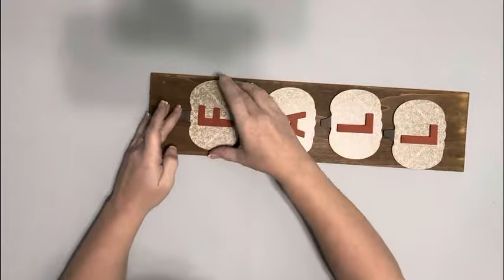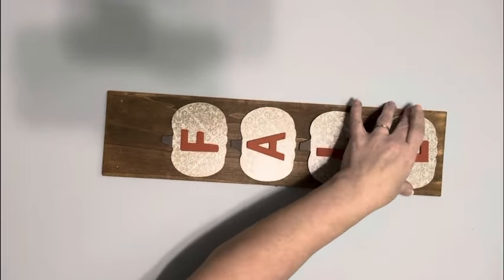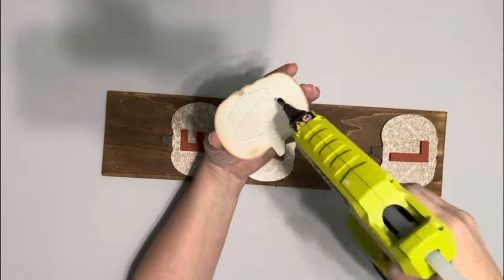I then place them on my wood hanger, getting them more towards the bottom, because I'll be making a bow for the top. Once I get my placement how I want it, I hot-glue each of them into place.